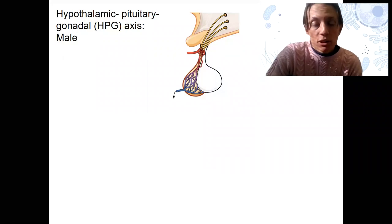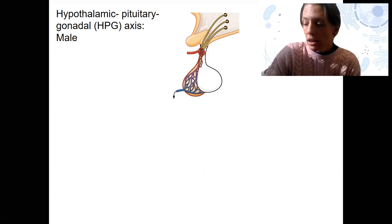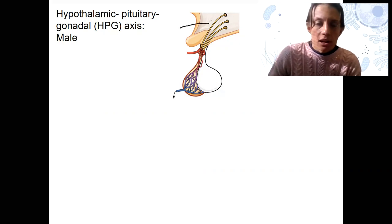You know I'm excited because we get to go back to the hypothalamic pituitary gonadal axis. Here is our hypothalamus, and of course the axons that project down into the portal system to send hormone locally to the anterior pituitary.